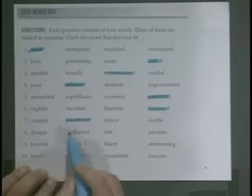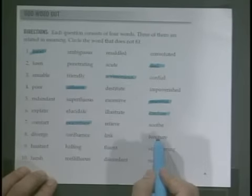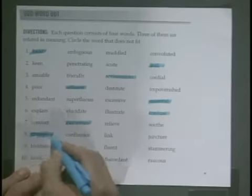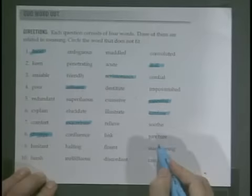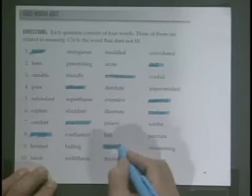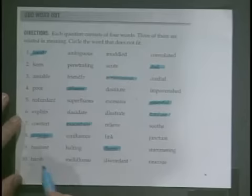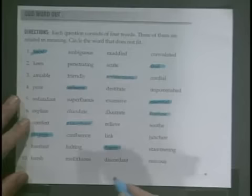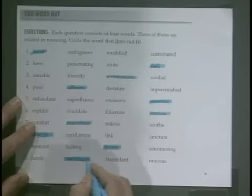Diverge is to go apart; confluence, link, and juncture all mean to come together, so we need diverge — that's the one that does not fit. Hesitant and halting are the same thing as stammering; fluent flows very easily — that's the odd one out. Harsh and mellifluous are opposites — mellifluous means pleasing to the sound, while harsh, discordant, and raucous all mean displeasing, difficult to listen to, so we need mellifluous.